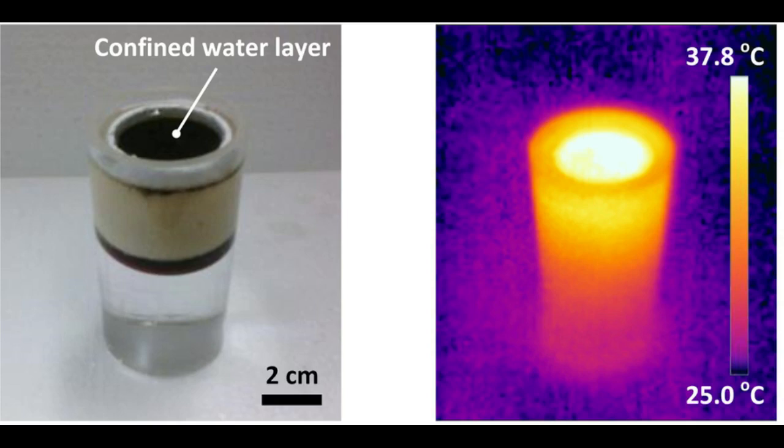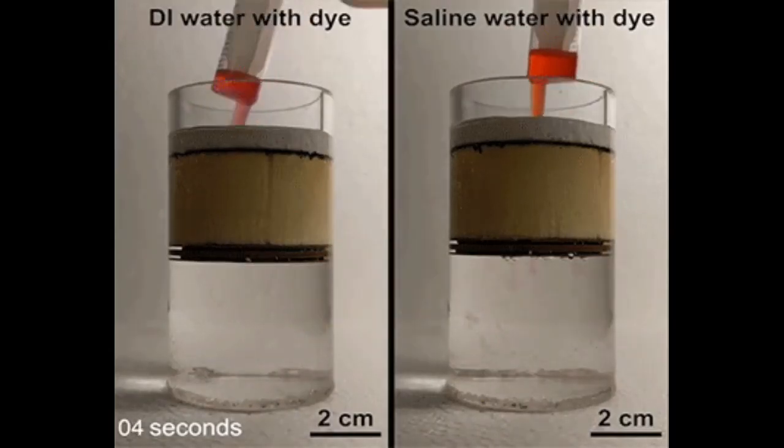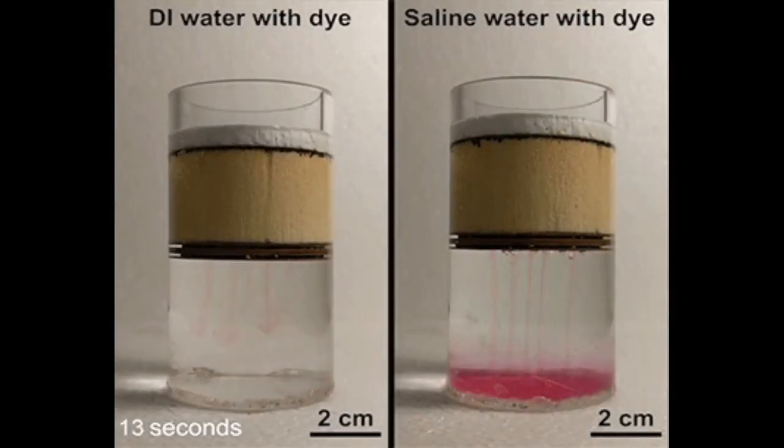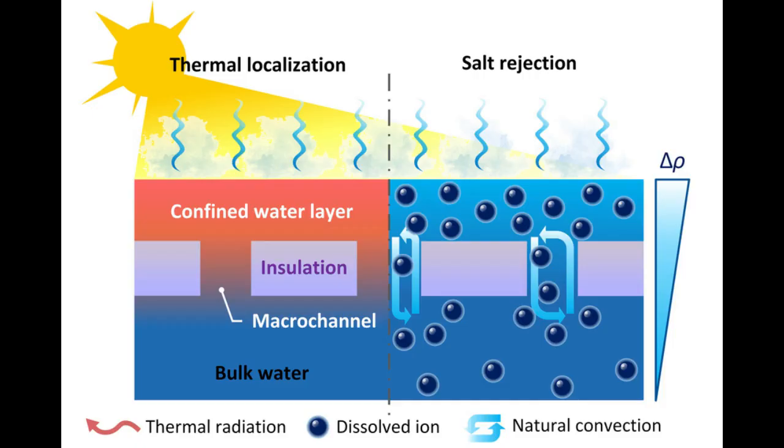The holes are large enough to allow for a natural convective circulation between the warmer upper layer of water and the colder reservoir below. That circulation naturally draws the salt from the thin layer above down into the much larger body of water below, where it becomes well diluted and no longer a problem.